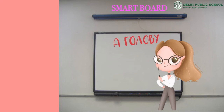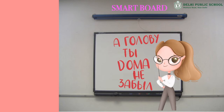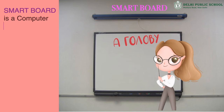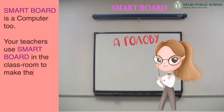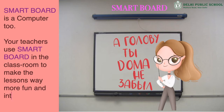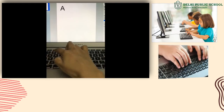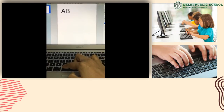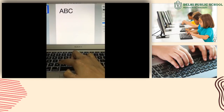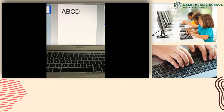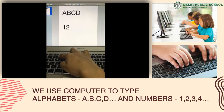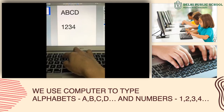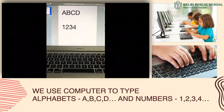Smart board — we all have a smart board in our classroom. Smart board is a computer too. Your teachers use the smart board in the classroom to make lessons way more fun and interesting for you. Here you can see that I am typing letters A, B, C, D and so on. I can keep on typing. So we use computers to type alphabets and numbers. We will learn this also in the computer class.